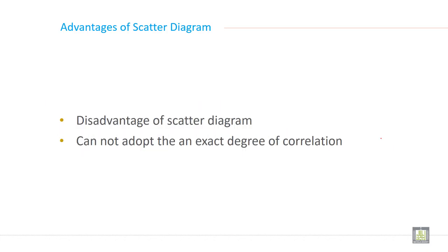What are again advantage of a scatter diagram? We discussed disadvantage of a scatter diagram. It cannot adopt the exact degree of correlation. It cannot tell you the exact degree of correlation. This is one of the biggest disadvantage of the scatter diagram.